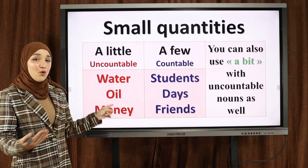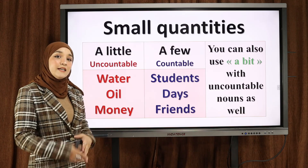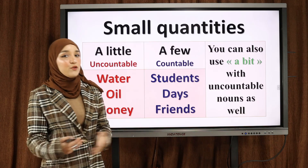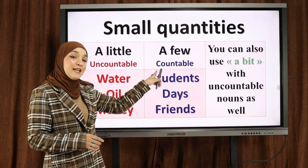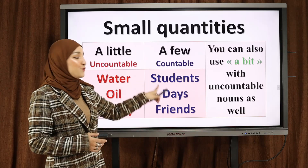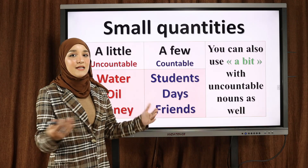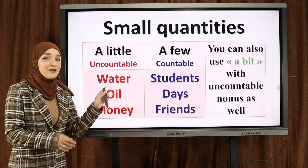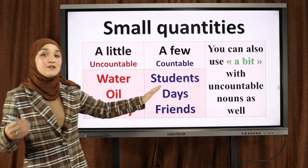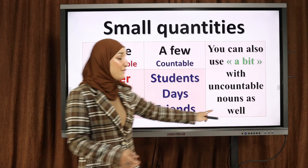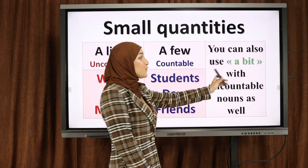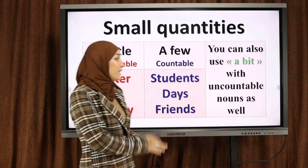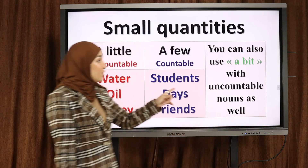For example: a little water — القليل من الماء; a little oil — القليل من الزيت; a little money — القليل من المال. A few is used to talk about countable nouns — which also means a small quantity. A few students — القليل من التلاميذ; a few days — القليل من الأيام; a few friends — القليل من الأصدقاء. I have a little note: you can also use 'a bit', which also means a little — القليل من شيء, with uncountable nouns.